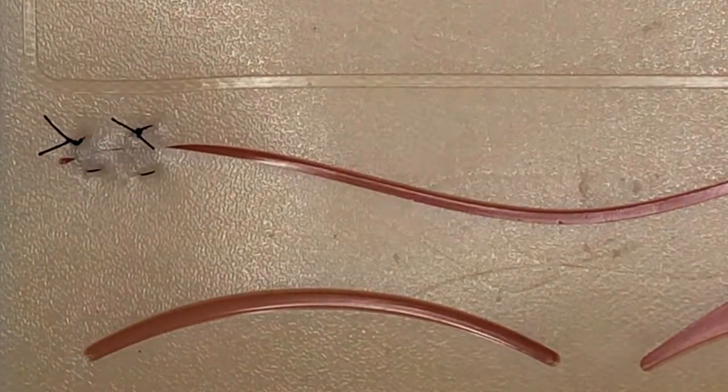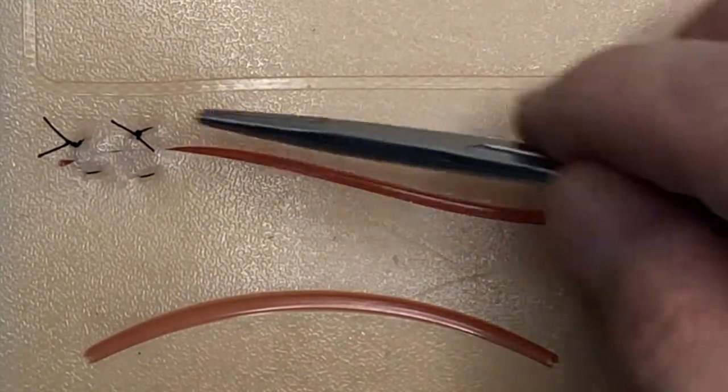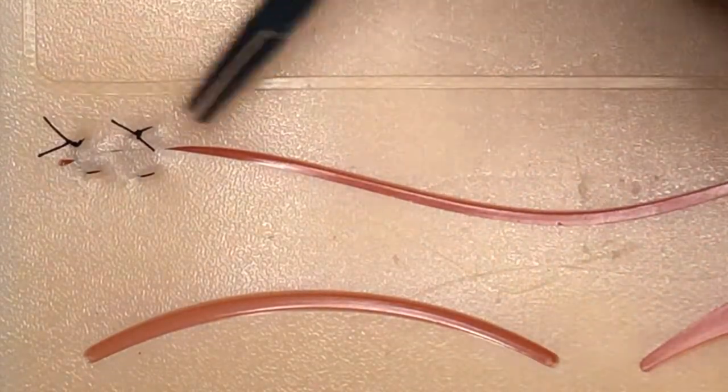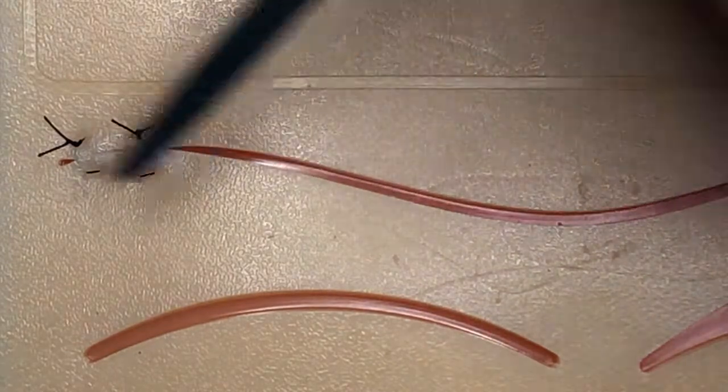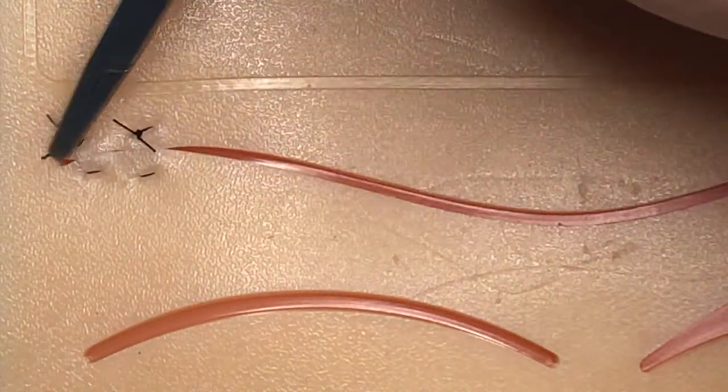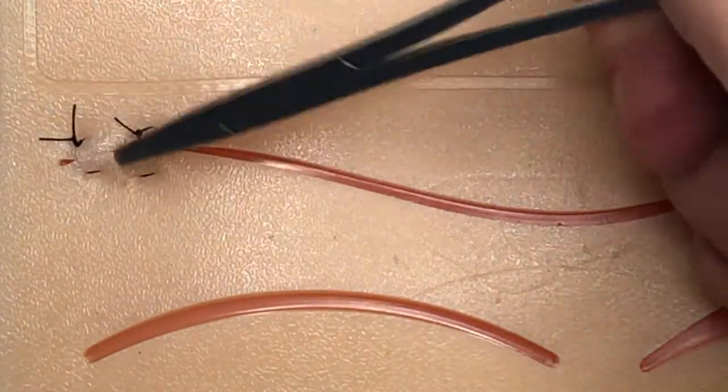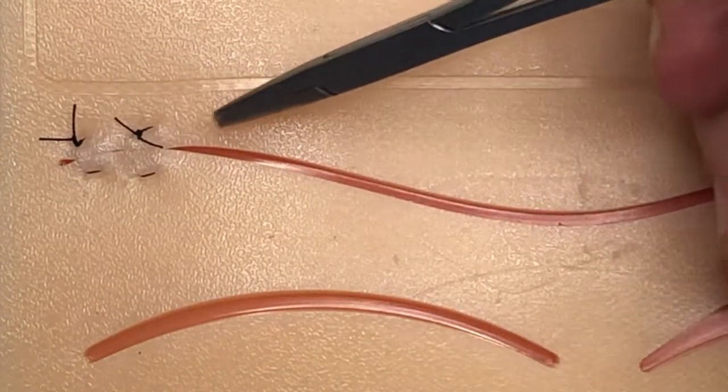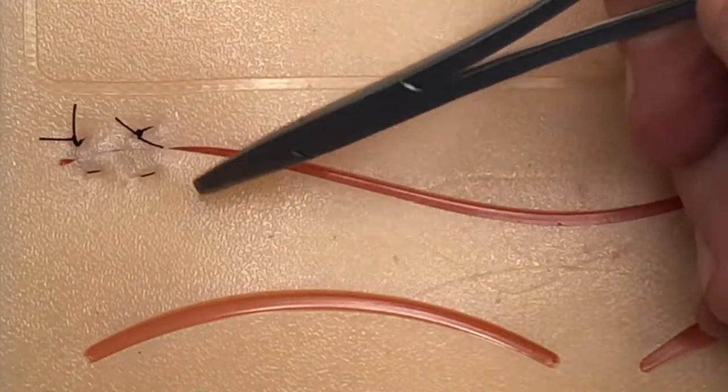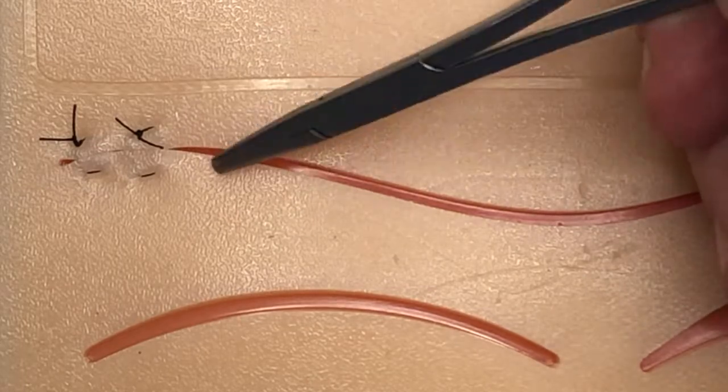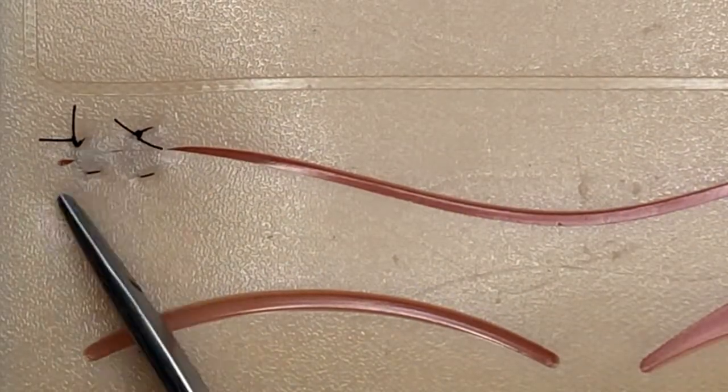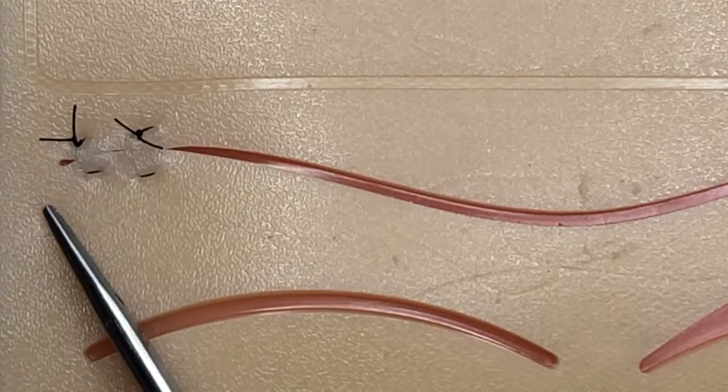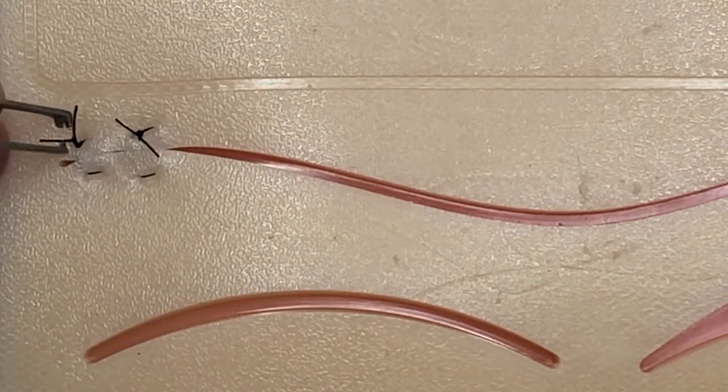As you can see, we've got two horizontal mattress sutures that are in line with each other—horizontal because they run horizontally. A vertical mattress suture would go from here to here and then back through in one line across.